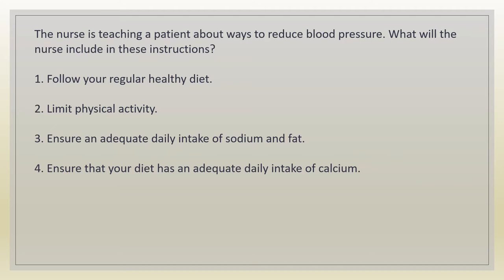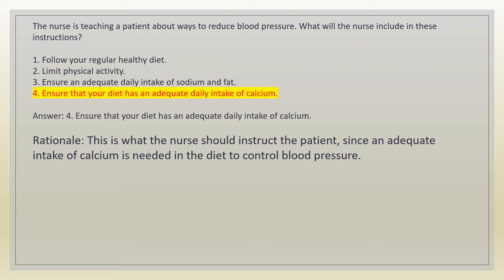The nurse is teaching a patient about ways to reduce blood pressure. What will the nurse include in these instructions? 1. Follow your regular healthy diet. 2. Limit physical activity. 3. Ensure an adequate daily intake of sodium and fat. 4. Ensure that your diet has an adequate daily intake of calcium. Answer: 4. Rationale: an adequate intake of calcium is needed in the diet to help control blood pressure.